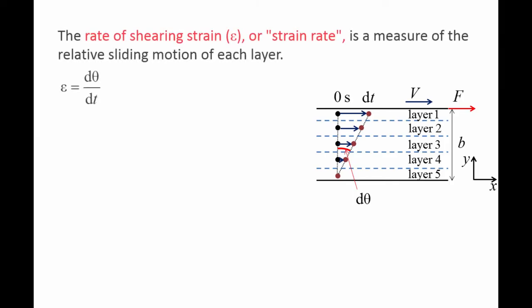Examining the lines formed by the fluid particles at time 0 and time dt, we see that the fluid has deformed by a small angle d theta. We call the rate that d theta changes in time the rate of shearing strain, which is also sometimes called the strain rate.